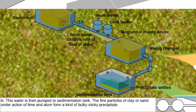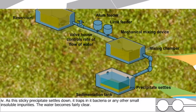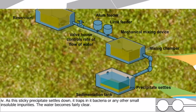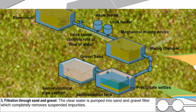The fine particles of clay or sand, under the action of lime and alum, form a kind of bulky sticky precipitate. As this sticky precipitate settles down, it traps bacteria or any other small insoluble impurities, and the water becomes fairly clear.